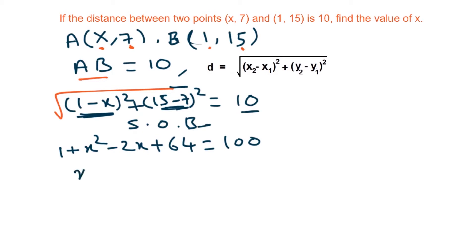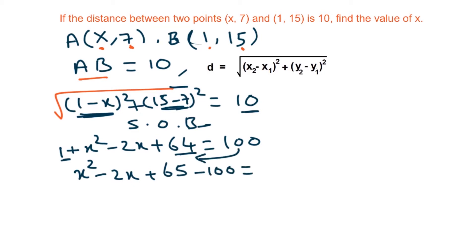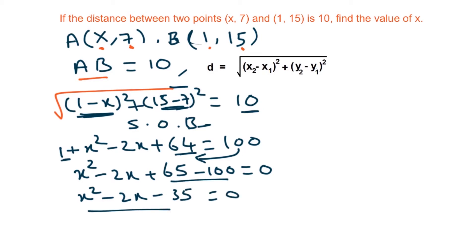We write it as x square minus 2x. Now 1 plus 64 is 65. Transposing 100 to the left-hand side gives 0 = x square minus 2x minus 35. We have to solve this quadratic equation using the factorization method.